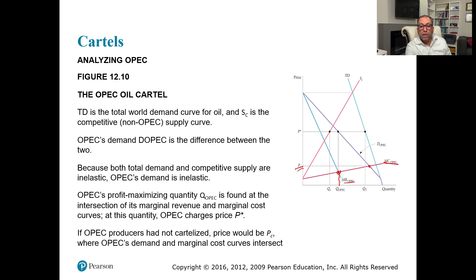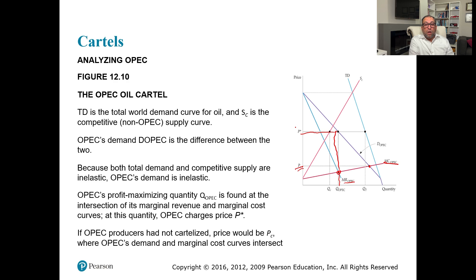This is the competitive price, but OPEC is not setting the competitive price — they are setting a higher price. TD is the total demand curve for oil, and SC is the competitive non-OPEC supply curve. Because both total demand and competitive supply are inelastic, OPEC's demand is inelastic, and OPEC's profit-maximizing quantity Q-OPEC is found at the intersection of its marginal revenue and marginal cost curves. At this quantity, OPEC charges price P-star. If OPEC producers had not cartelized, price would be P-C, where OPEC's demand and marginal cost curves intersect.